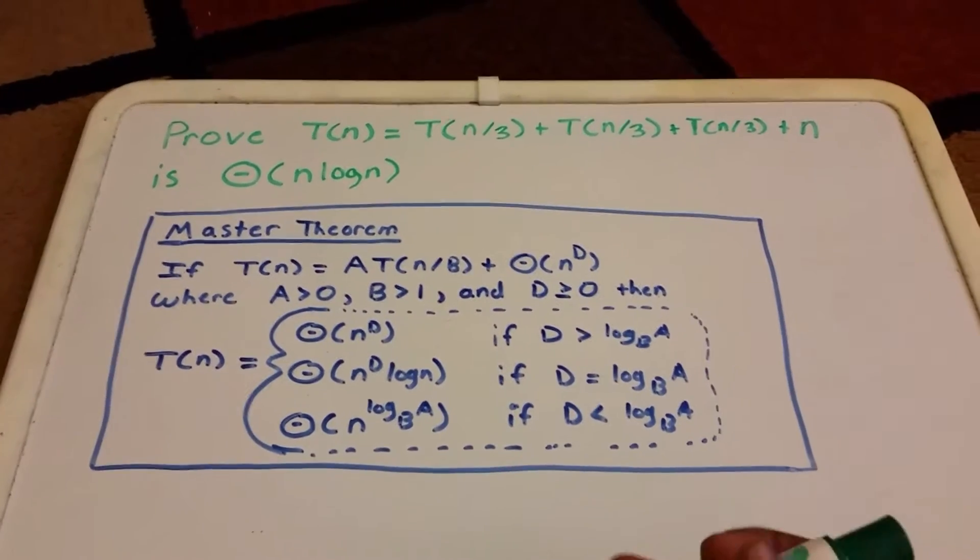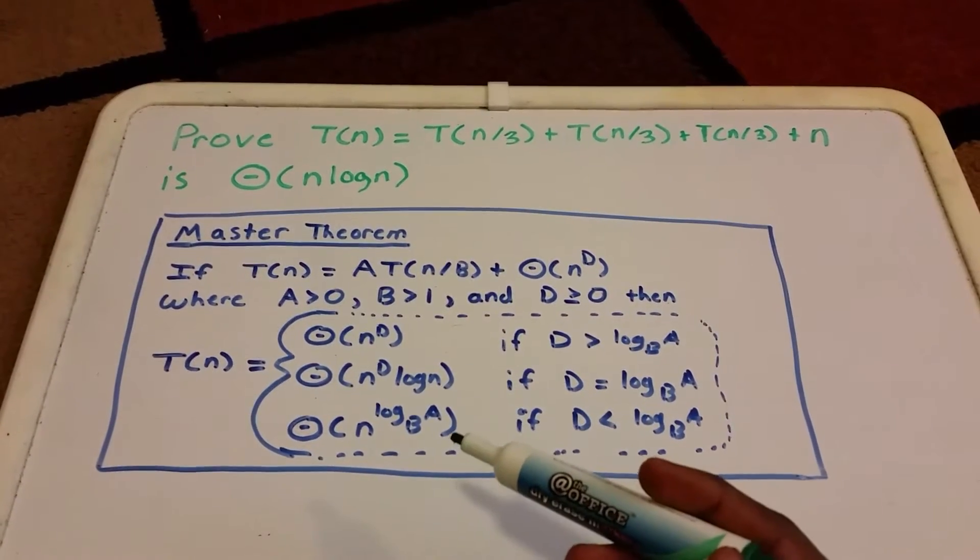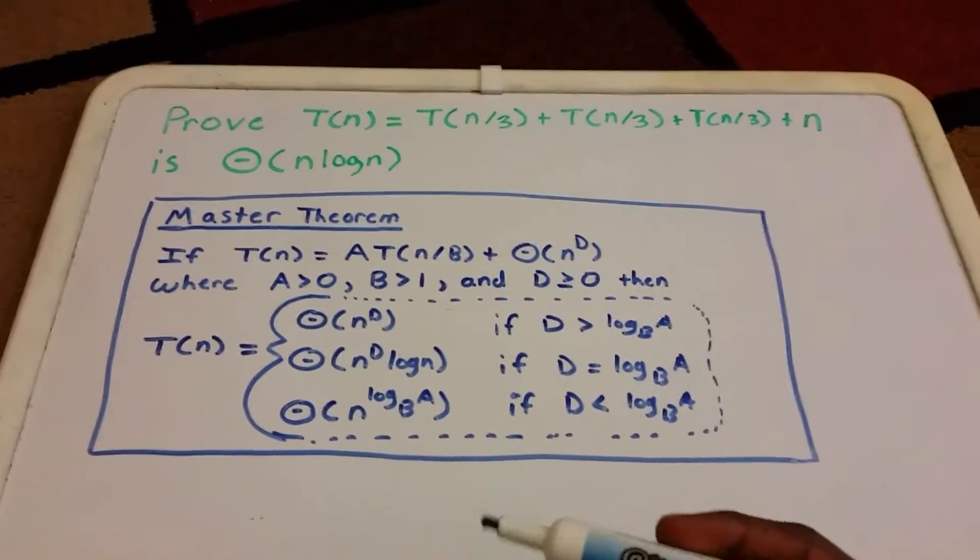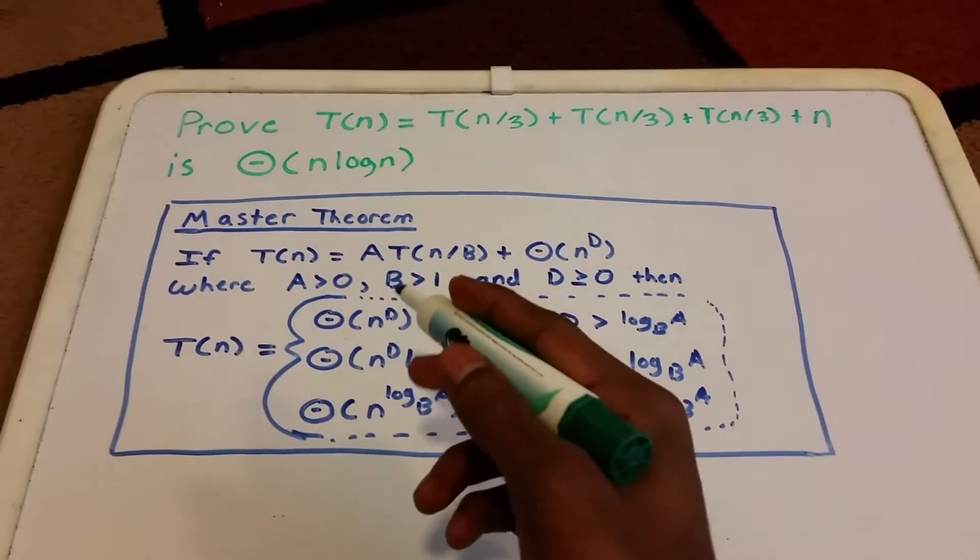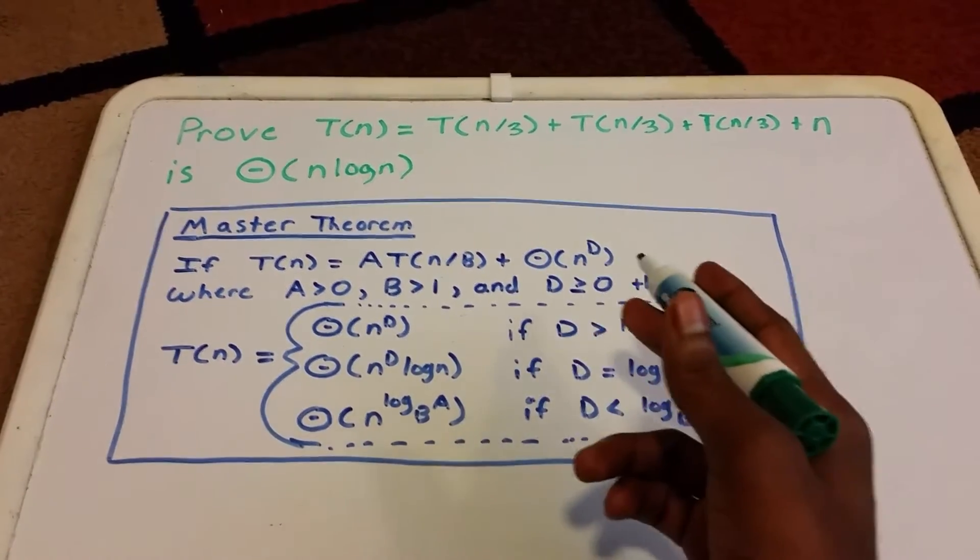At first glance, our recurrence doesn't look like it's in that form a·T(n/b) + Θ(n^d), so we're going to rewrite it to make it into that form.